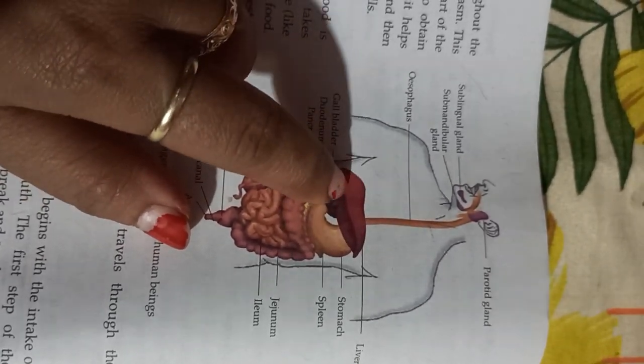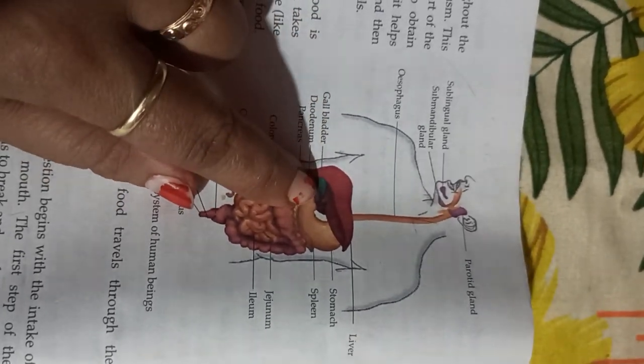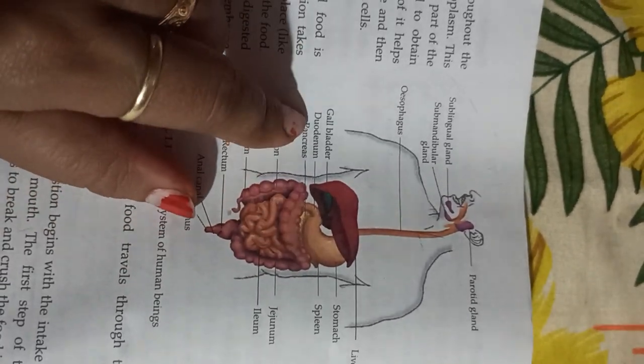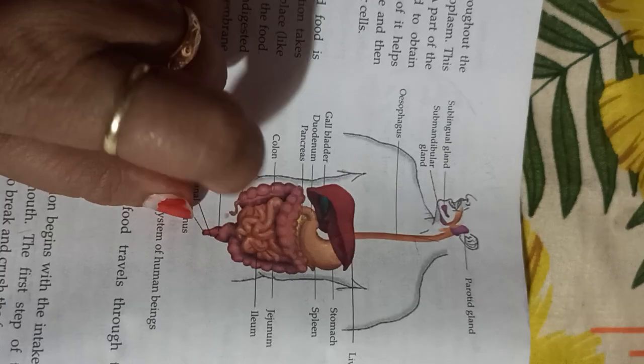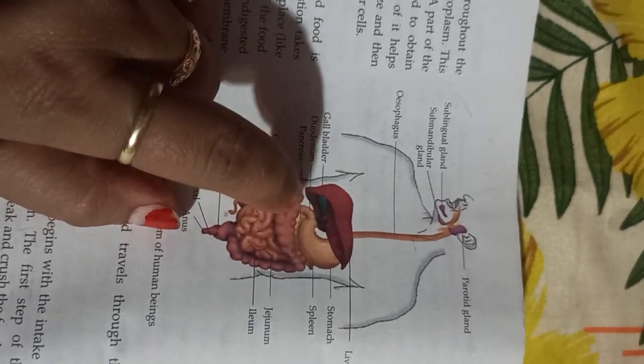From the liver, bile juice is secreted which is stored in the gallbladder. You can see here the gallbladder is present. The pancreas is present just below the stomach, and pancreatic juice is released from the pancreas.